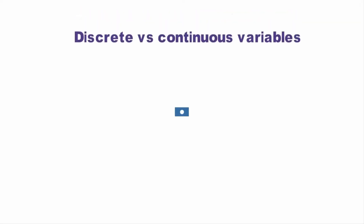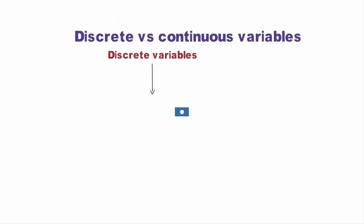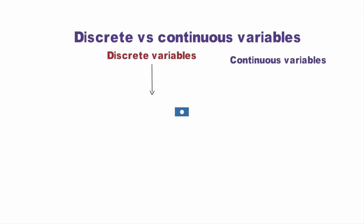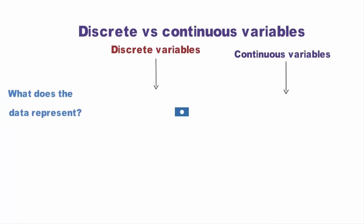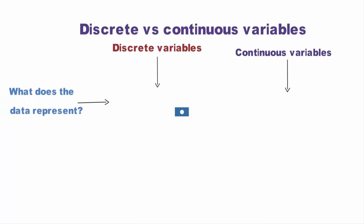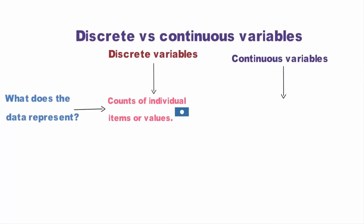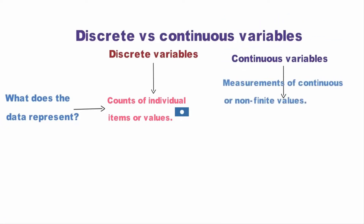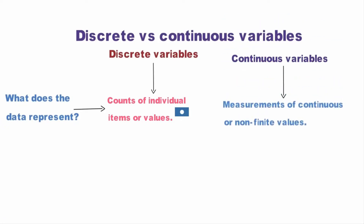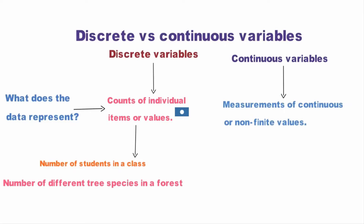Discrete versus continuous variables: Discrete variables represent counts of individual items or values — for example, the number of students in a class or the number of different tree species in a forest. Continuous variables represent measurements of continuous or non-finite values — for example, distance, volume, or age.